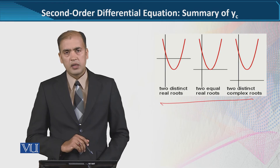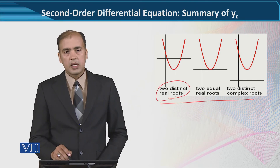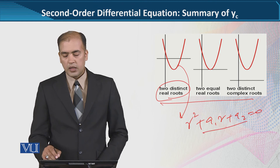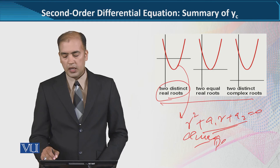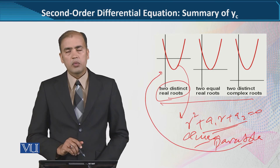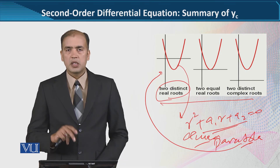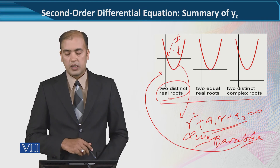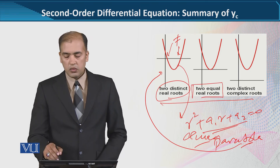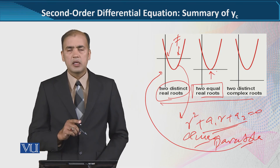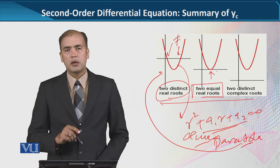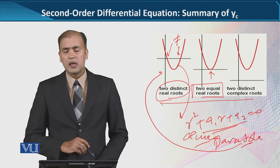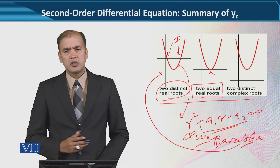اب ان کے graphical depiction کی بات ہے. Distinct real root case میں characteristic equation کی quadratic form کی وجہ سے ایک parabola develop ہوتا ہے جو x-axis کو دو points پر کاٹتا ہے — جس کی وجہ سے دو roots ہیں اور ان کی values ایک جیسی نہیں ہیں. Two equal real roots میں صرف ایک point نظر آتا ہے — وہ ایک ہی repeated یا double root ہے، ایک point of tangency.